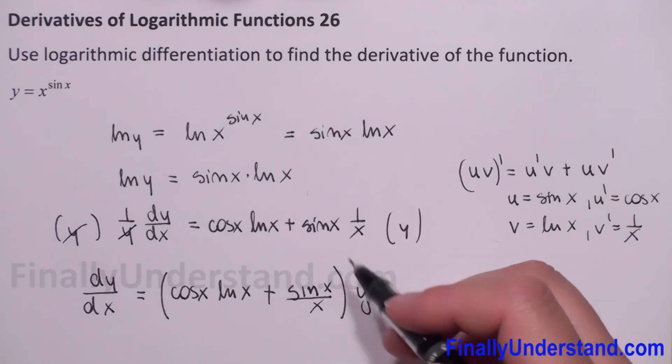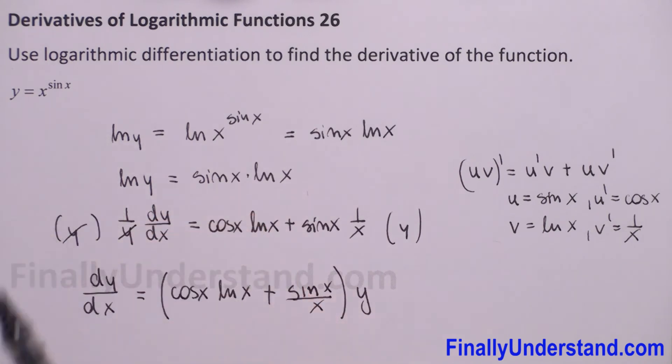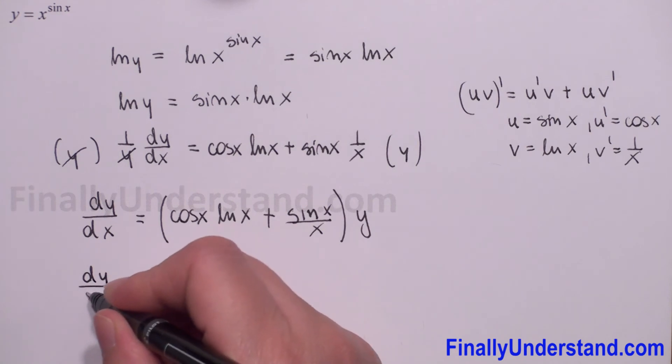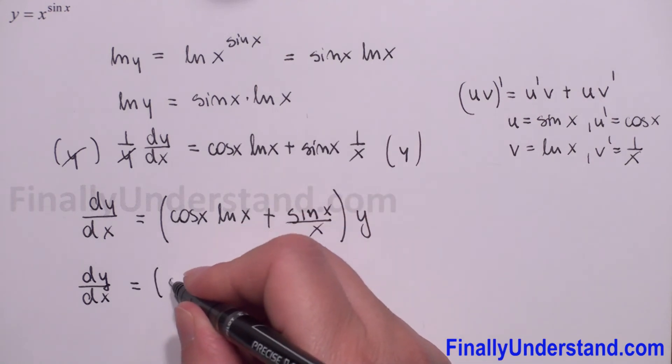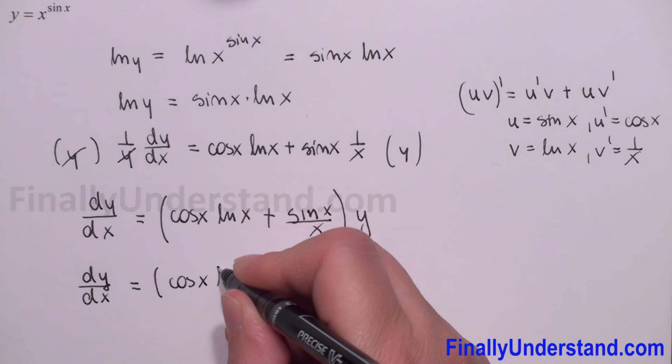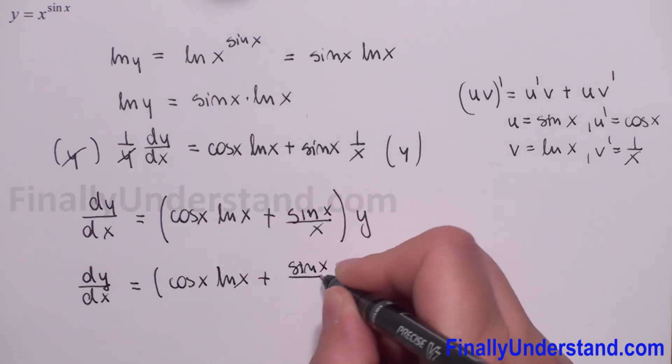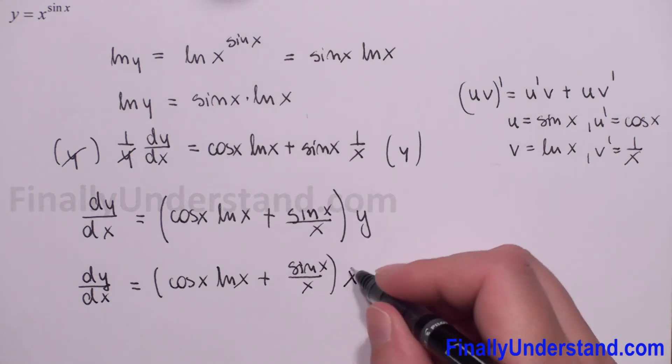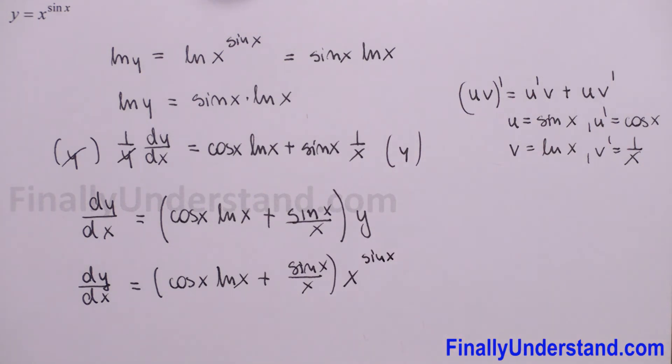y is equal x to sine of x power. So dy over dx is equal, we just copy the parenthesis, so it's cosine of x times natural log of x plus sine of x over x times y, like I said, is x to sine of x power.